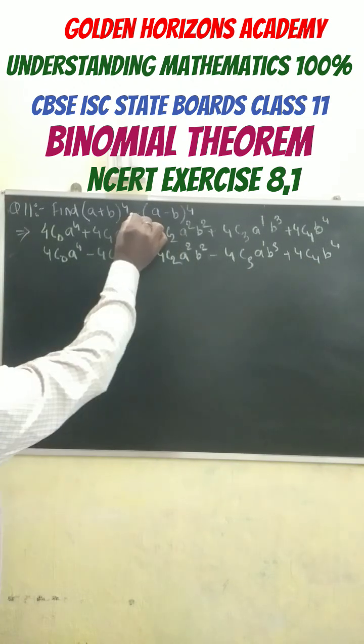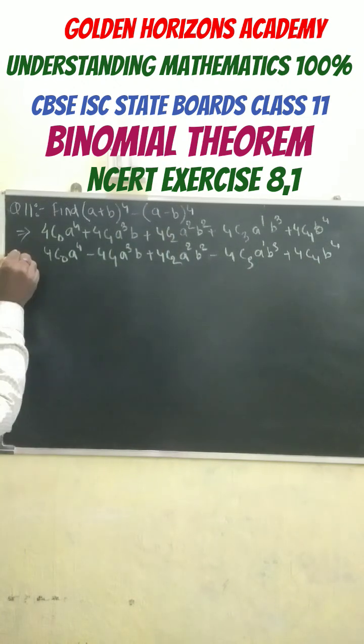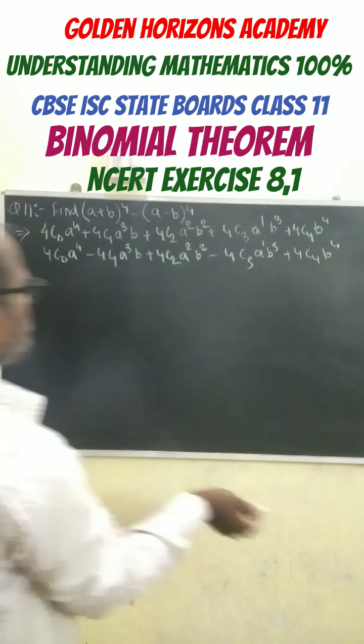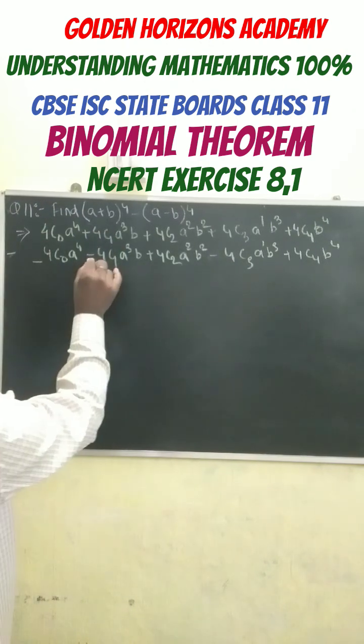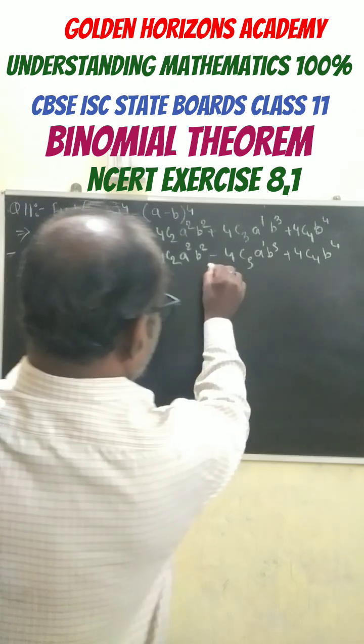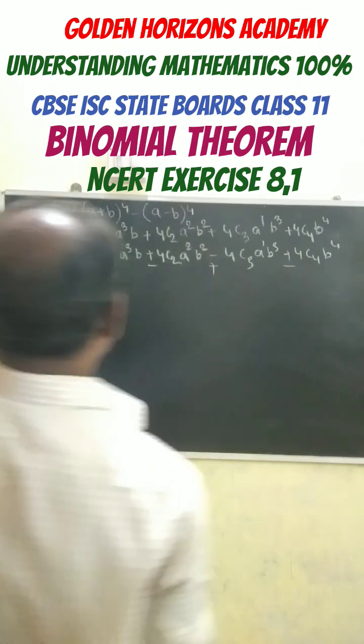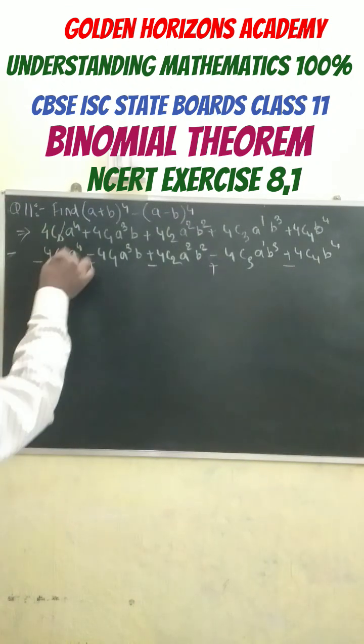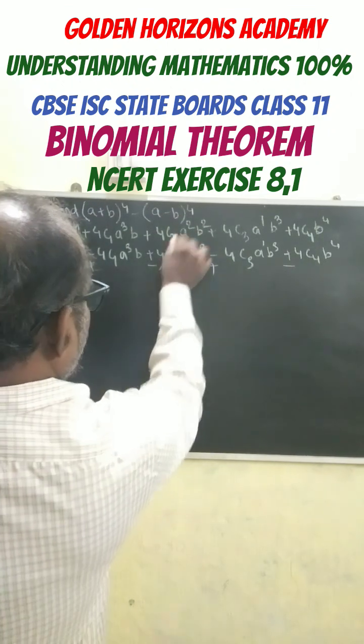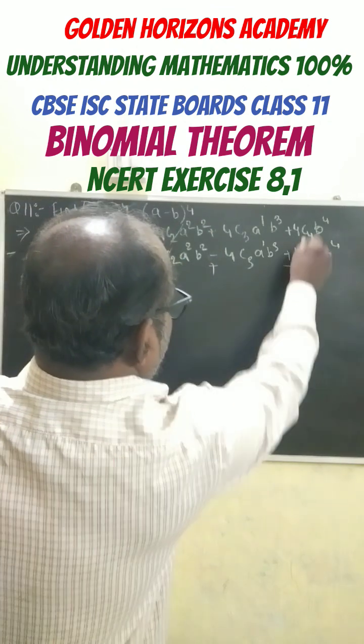But here it is given minus sign, so we put here minus, so this whole sign gets changed. This becomes minus, this plus, minus, this becomes plus, this becomes minus. So finally, this gets cancelled off, this gets cancelled off, and this gets cancelled off.